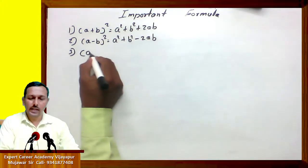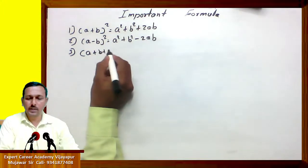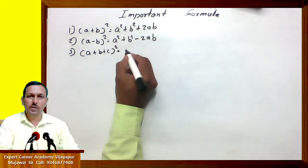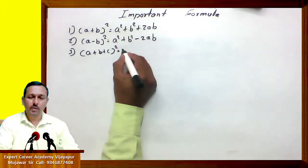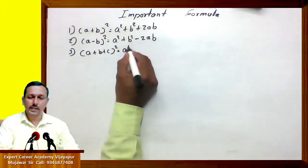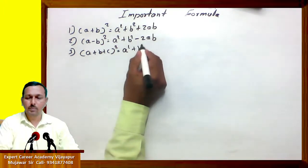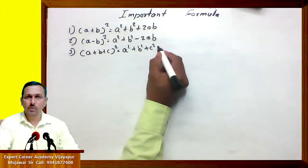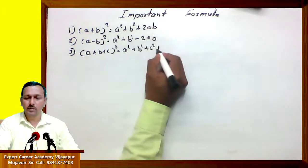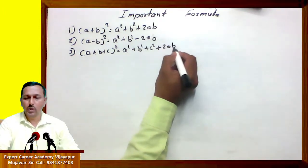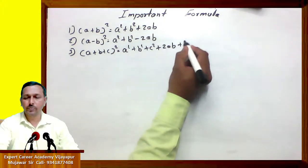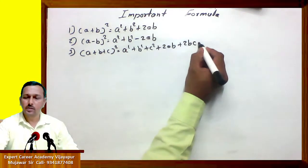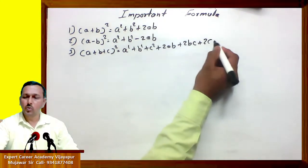(a plus b plus c) bracket square equals a square plus b square plus c square plus 2ab plus 2bc plus 2ca.